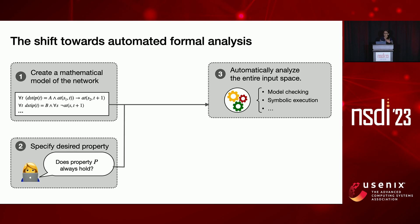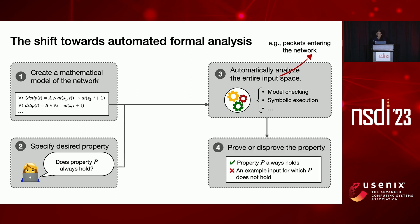That tool is going to automatically analyze the entire input space for you — in this case, all the different packets that could enter your network. It will either tell you that no matter what the input looks like the property is always going to hold, or give you a counterexample: a concrete input for which the property is not going to hold.